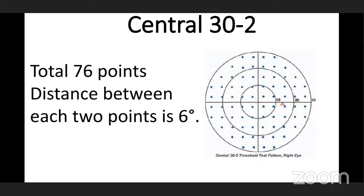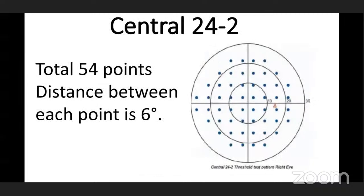Central 24-2 is the default test. We check 24 degrees of visual field area with a total of 54 points and 6 degrees between each point. At the nasal area, there are two extra points, which indicate that this test is useful for detection of early glaucoma.